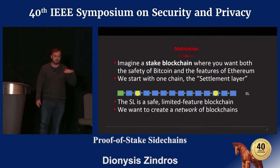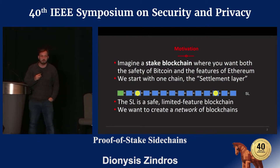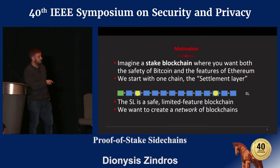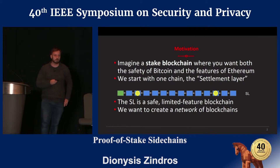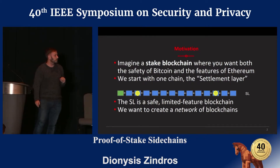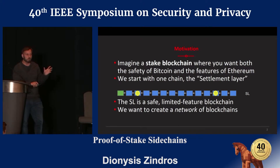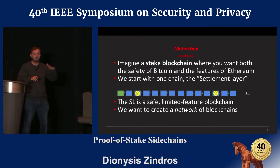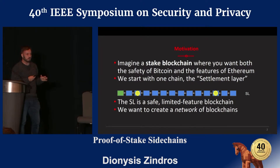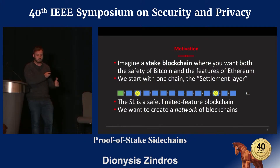What we're trying to do is create a cryptocurrency in which you have multiple blockchains that are able to communicate with one another and exchange information and value. We start with a blockchain called SL — the settlement layer — which plays the role of Bitcoin. It has a Genesis block and a few other blocks with transactions, and we intend it to be a limited feature blockchain, mostly for moving money around. We hope people will use this as a savings blockchain where they keep their money safe.